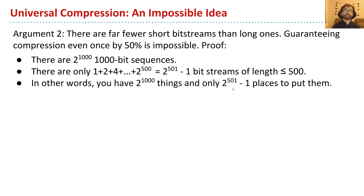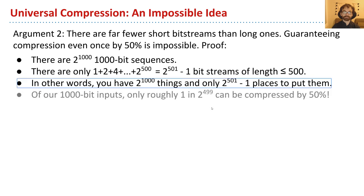So in other words, if you're trying to compress, you have 2 to the 1,000 possible inputs to your algorithm and only 2 to the 501 minus 1 places to put, that is, destinations. And so if you want to be able to uniquely decompress, you can't make a bijection between these two sets. This is a much larger set than this one.